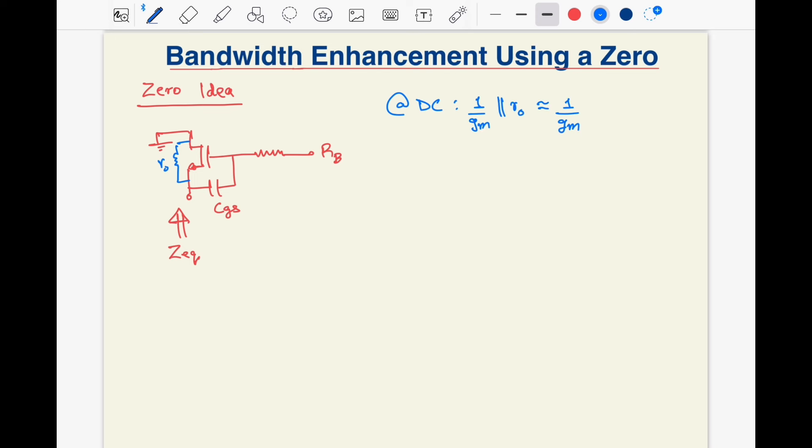So if we design the circuit with R which is much greater than 1 by gm, then we can have an output impedance that increases with frequency, and that can possibly compensate for the gain reduction due to the pole.